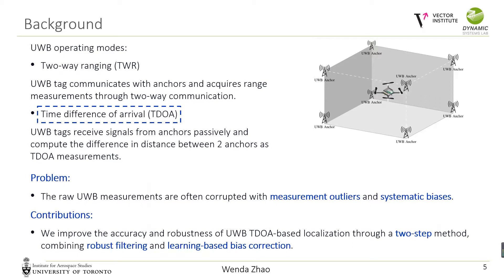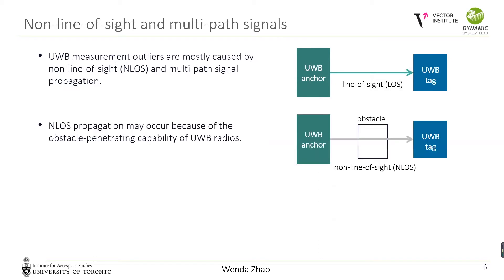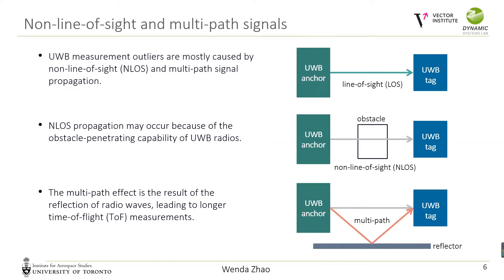Although UWB can achieve superior measurement accuracy compared to other radio frequency technologies, the raw UWB measurements are often corrupted with measurement outliers and systematic biases. To address these challenges, we present a two-step method combining robust filtering and learning-based bias correction to improve the accuracy and robustness of UWB TDOA-based localization. UWB measurement outliers are mostly caused by non-line-of-sight and multipath signal propagation. Compared to direct line-of-sight signal propagation, non-line-of-sight may occur because of the obstacle-penetrating capability of UWB radios.